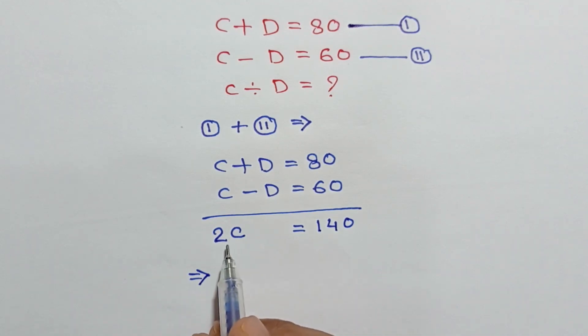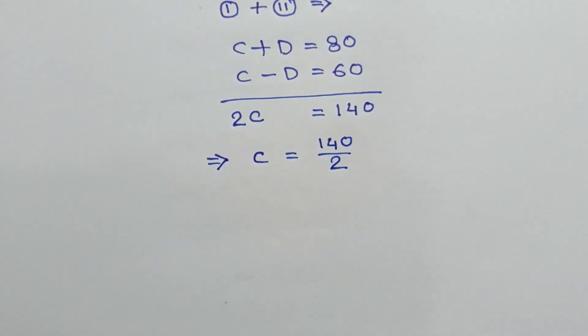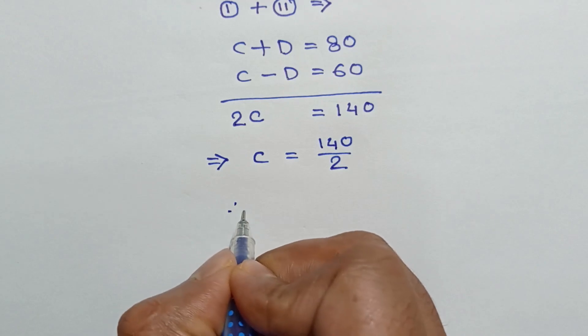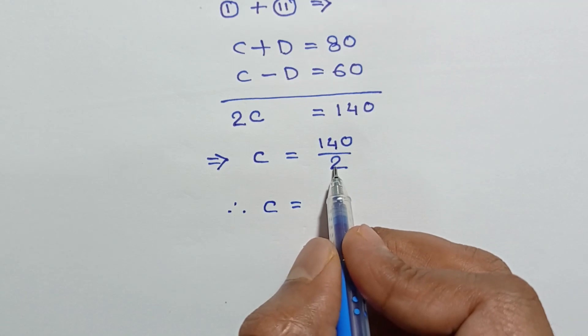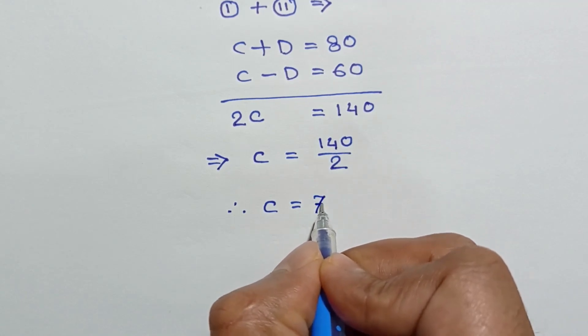If we divide both sides by 2, we will have C is equal to 140 over 2. So the value of C is equal to 140 divided by 2, which is equal to 70.